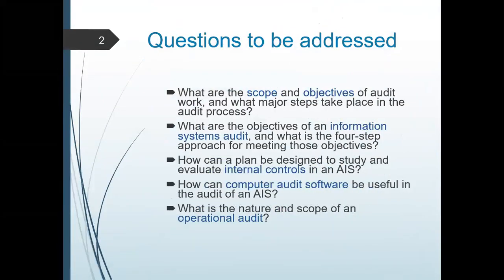The topics we will be discussing today will be about the scope and objective of your audit work and the major steps taken during the audit process in a CIS environment. Next is the objectives of the information system audit and the four-step approach of meeting those objectives. You have your design, study, and evaluation of your internal control in an AIS environment. Next is the different computer software and how they are useful in your audit of an AIS, and of course the nature and scope of your operational audit.